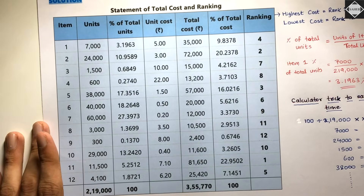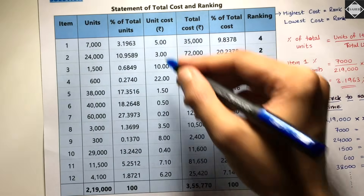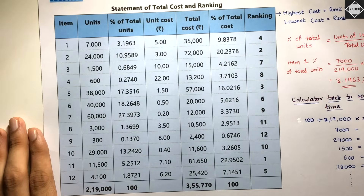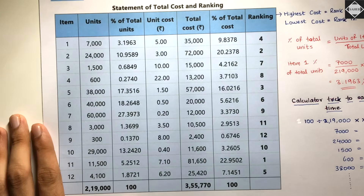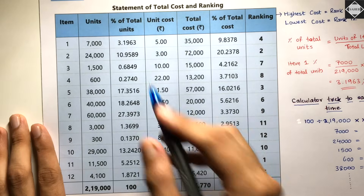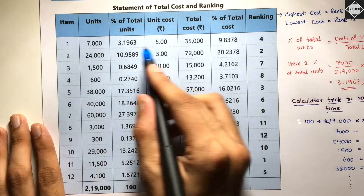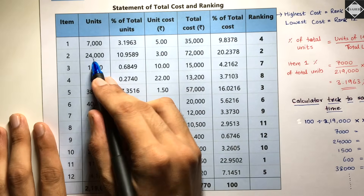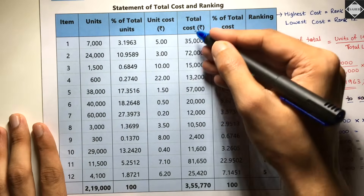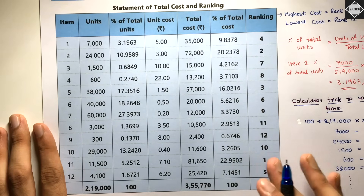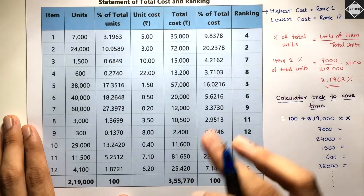The unit cost is directly given in the question — 5, 3, 10, 2, and so on — so copy all unit costs. Now calculate total cost by multiplying units by unit cost: 7,000 × 5 = 35,000; 24,000 × 3 = 72,000; and so on. After calculating all total costs, take their sum. Then repeat the same calculator trick to calculate the percentage of total cost for each item.